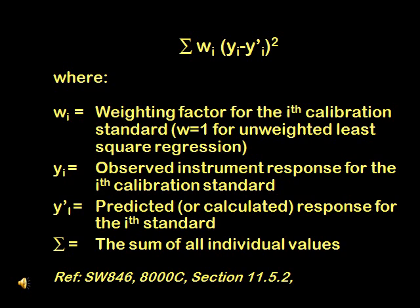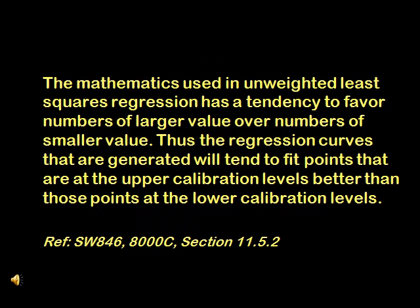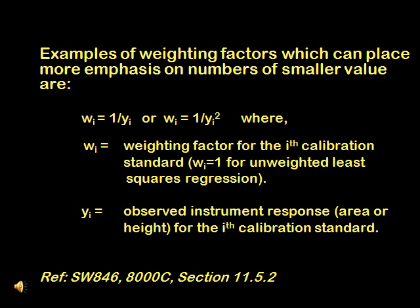The general form of the sum of the squares of the differences containing the weighting factor is shown in this slide. According to 8000C, the math used in unweighted least-square regression has a tendency to favor numbers of large value over numbers of smaller value. Therefore, the regression curves generated will tend to fit points at the upper calibration levels better than those at the lower calibration levels. To compensate for this, a weighting factor which reduces this tendency can be used. Examples of weighting factors which can place more emphasis on numbers of smaller value are given in this slide.